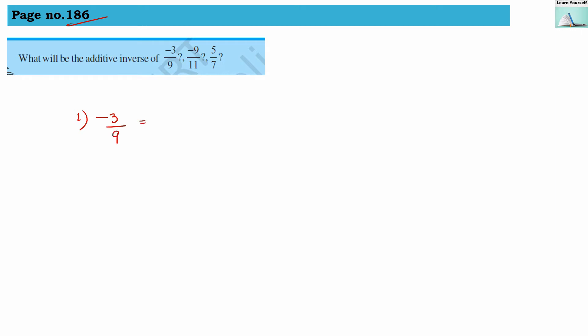The additive inverse of minus 3 by 9 is 3 by 9. Additive inverse means when you add the two numbers, the result should be 0. For example, if a's additive inverse is minus a, then a plus minus a gives us 0. So minus 3 by 9 plus 3 by 9 gives us 0.